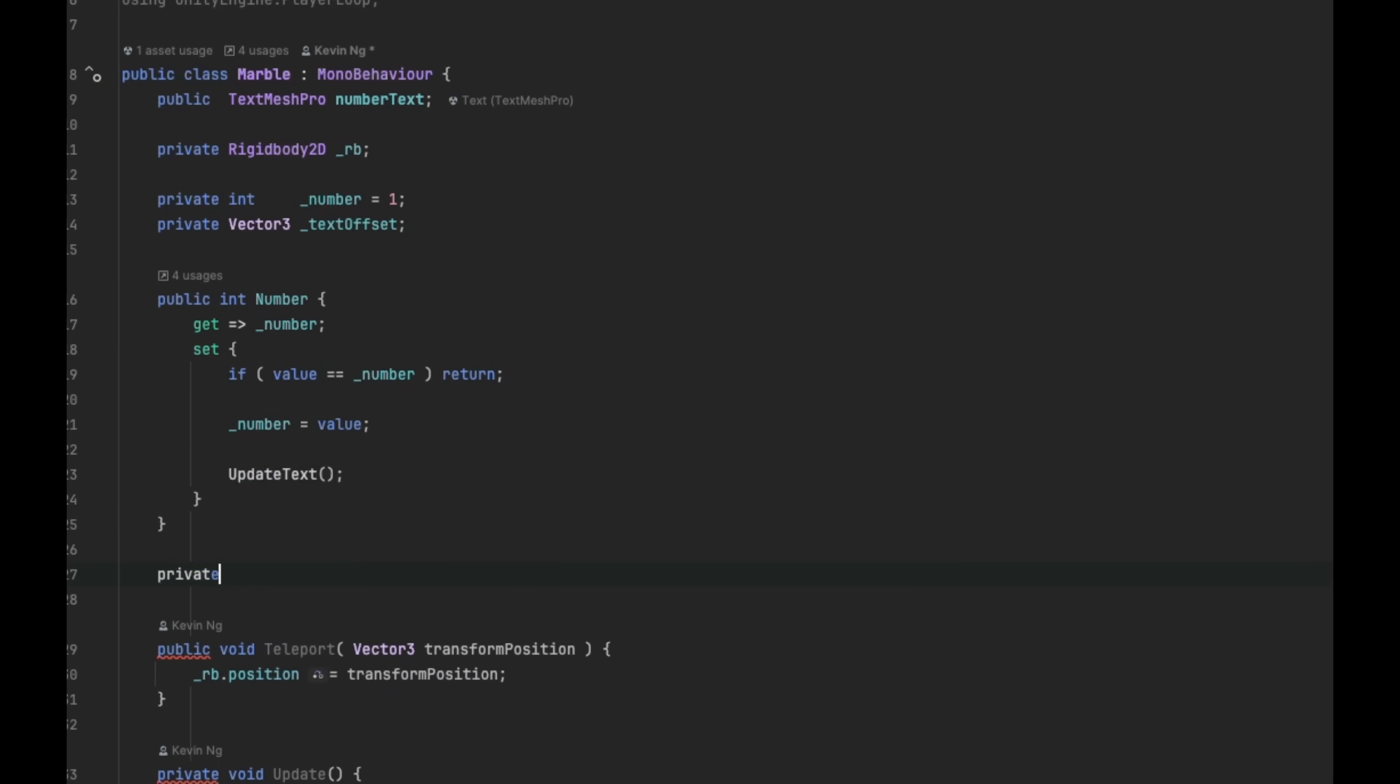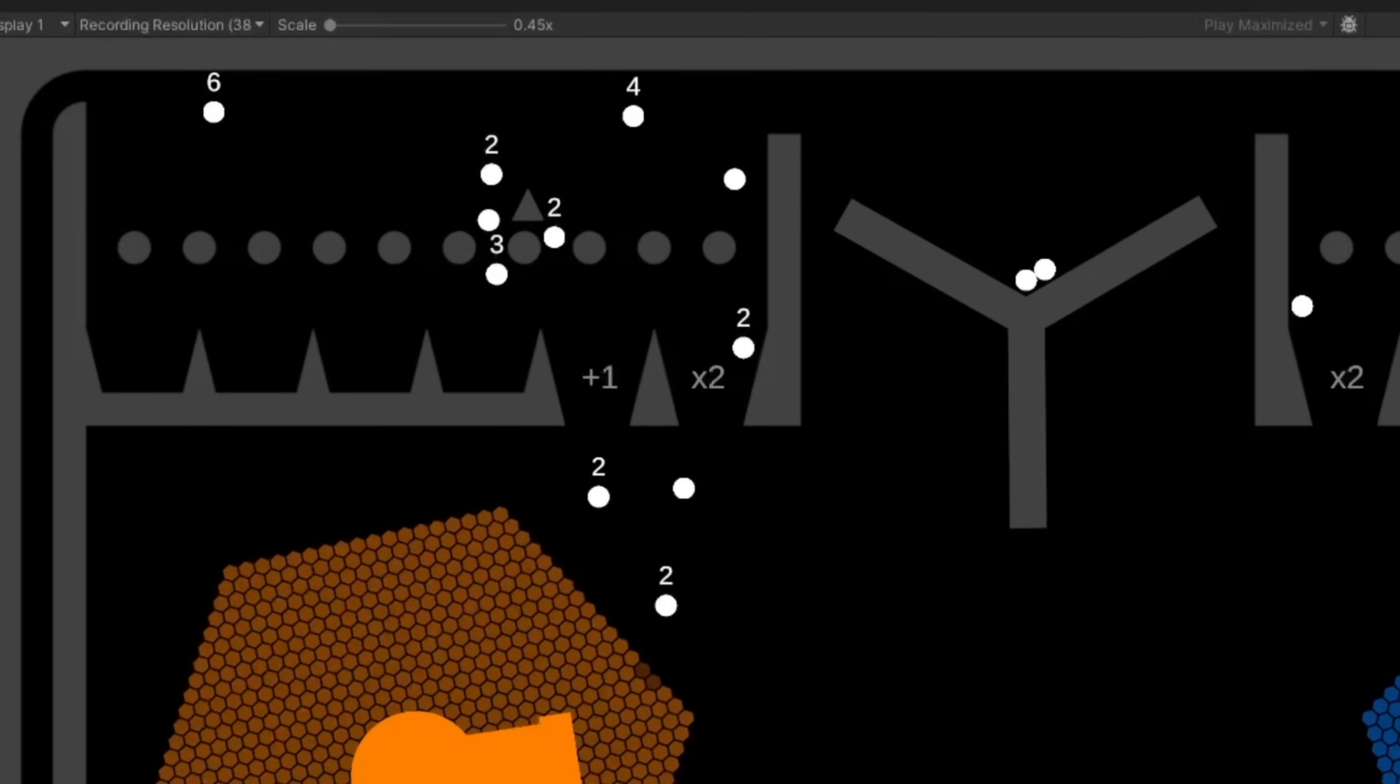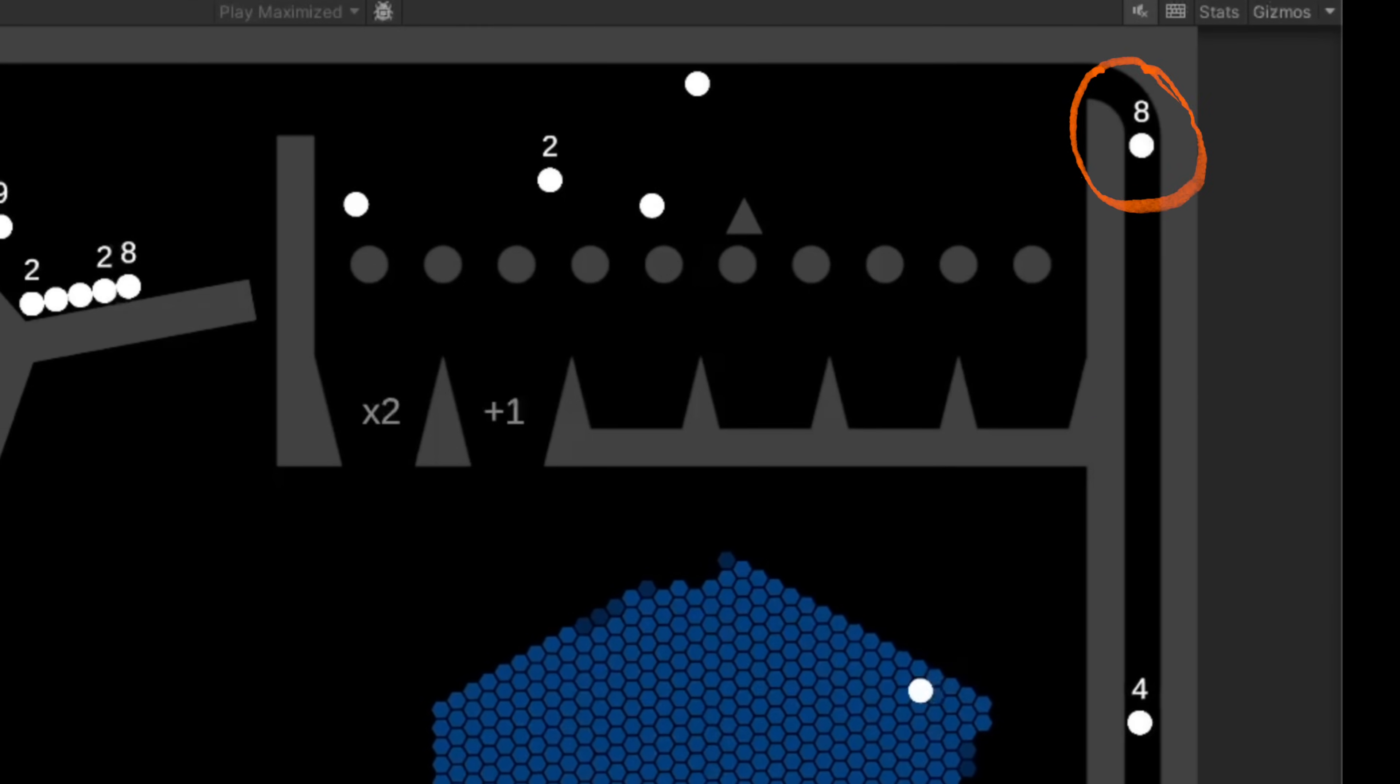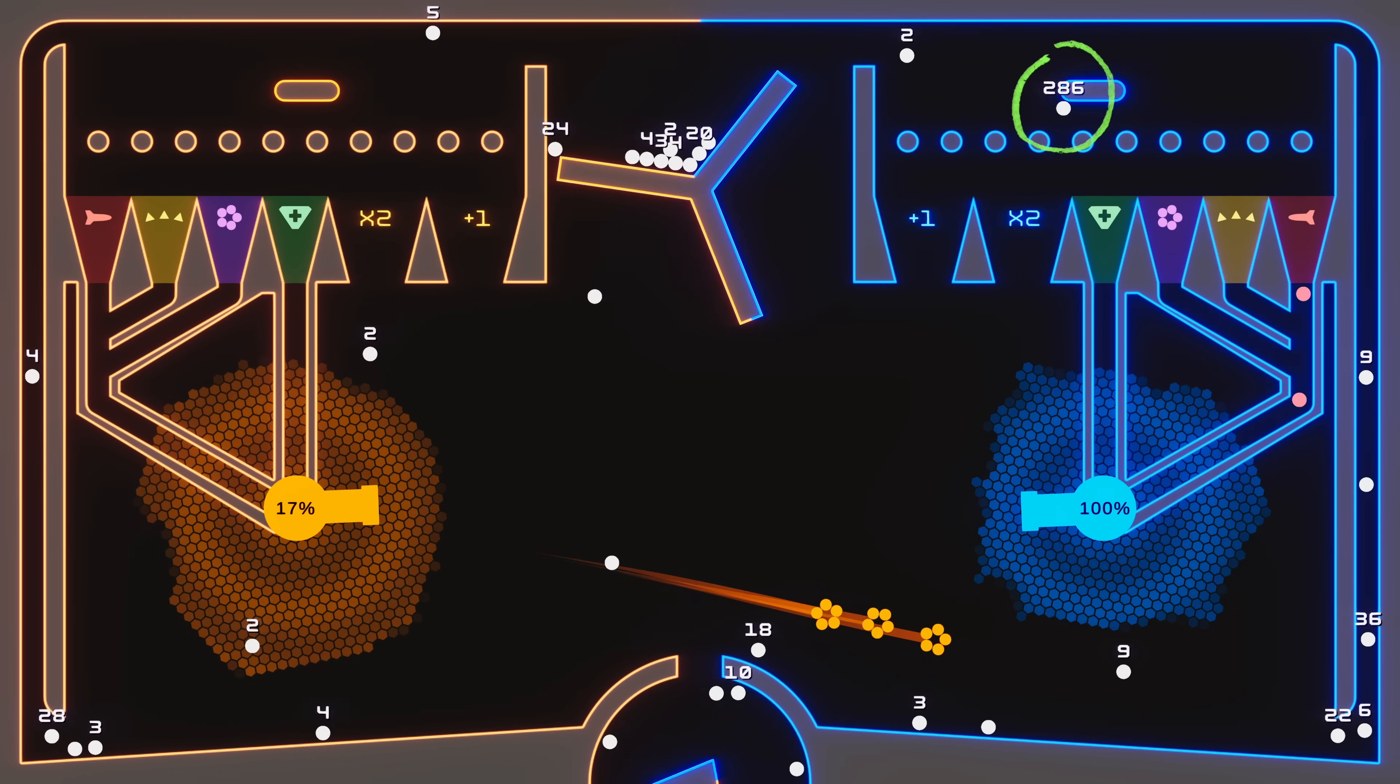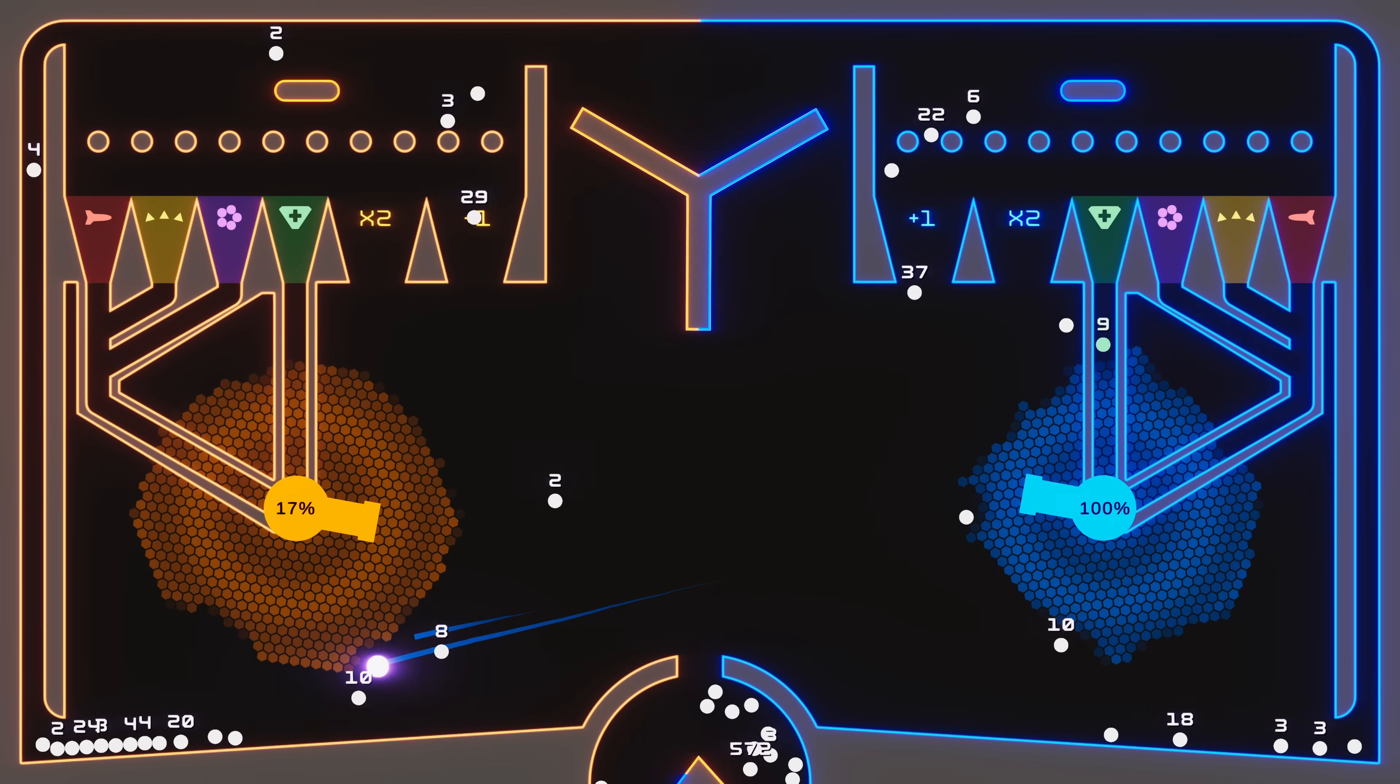Let's add another important wrinkle. Marbles can now have number values. Each marble starts as a 1, but when it falls into the right bucket, that number can be increased by 1, or doubled. And then, when a marble falls into an action bucket, it triggers the same number of actions as its value. This really helps to add drama, because it's fun to keep your eye on big numbers, especially if they swap sides, or fall back into the mixer.